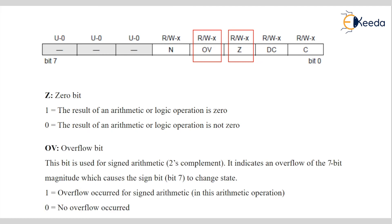The Overflow flag is used for signed arithmetic — two's complement. It indicates an overflow of the 7th bit magnitude, which causes the sign bit to change state. A value of 1 indicates that overflow occurred in signed arithmetic; 0 means no overflow occurred.